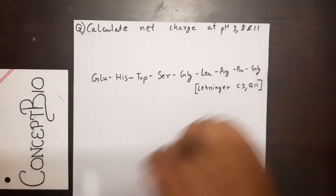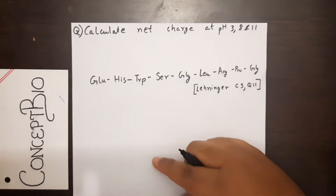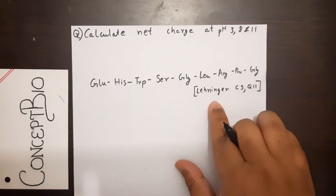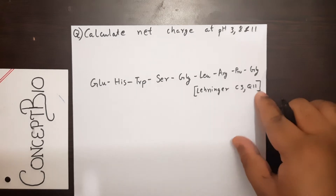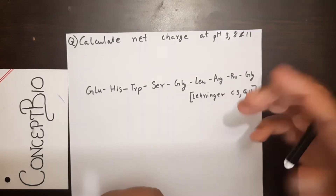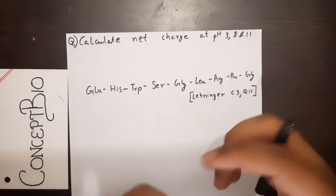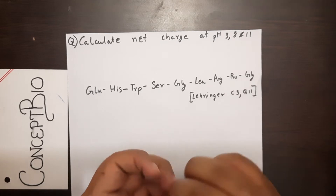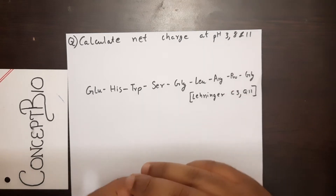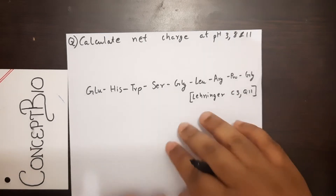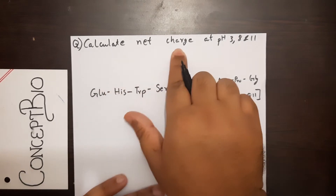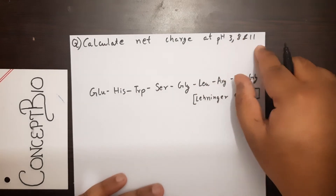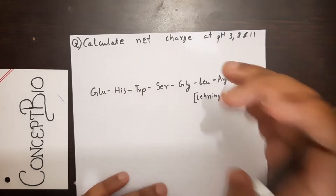Hello and welcome back to another video on ConceptBio. In this video I'm going to be looking at a question from Lehninger's chapter 3, question 11. The question is to calculate the net charge at pH 3, 8, and 11 for this polypeptide chain.